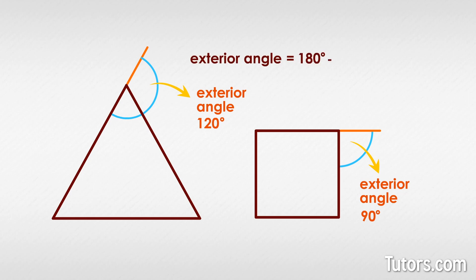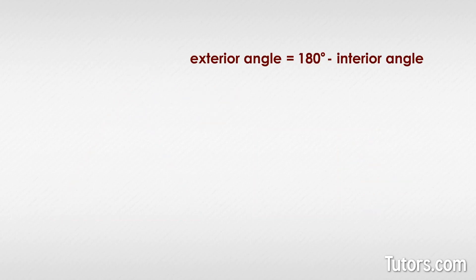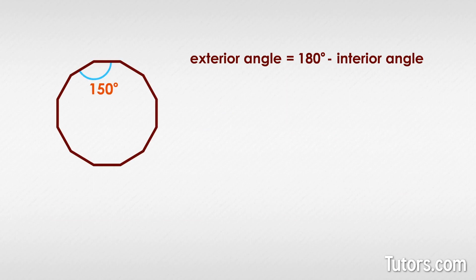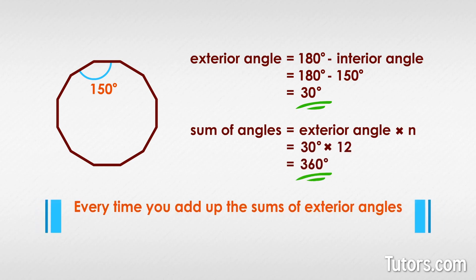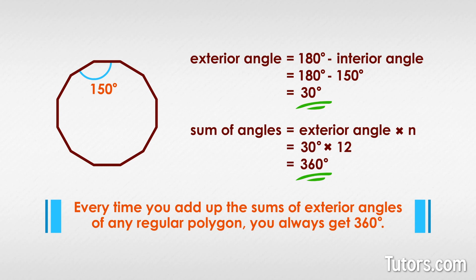For our equilateral triangle, the exterior angle at any vertex is 120 degrees. For a square, the exterior angle is 90 degrees. If you prefer a formula, subtract the interior angle from 180 degrees. For the dodecagon, we know any interior angle is 150 degrees, so the exterior angle is 180 − 150 = 30 degrees. Multiply the exterior angle by the number of sides: 30 × 12 = 360 degrees. The sum of exterior angles of any regular polygon always equals 360 degrees.